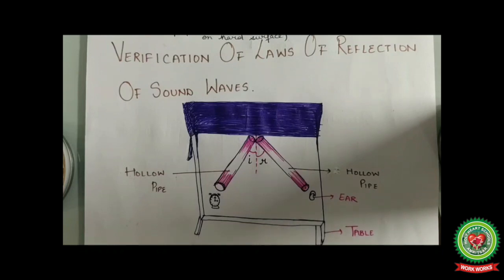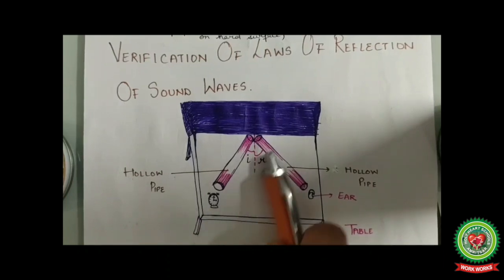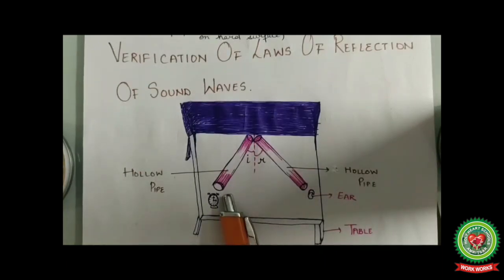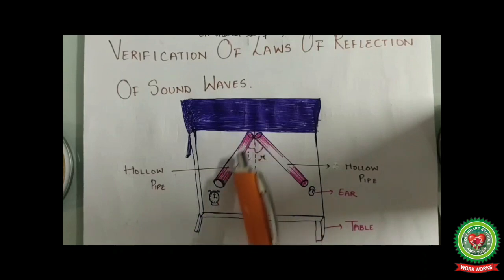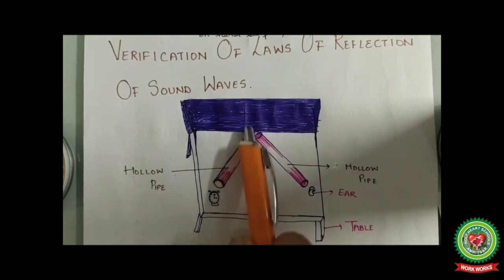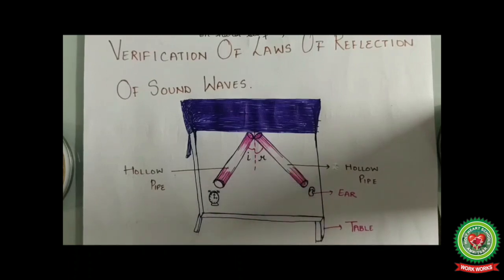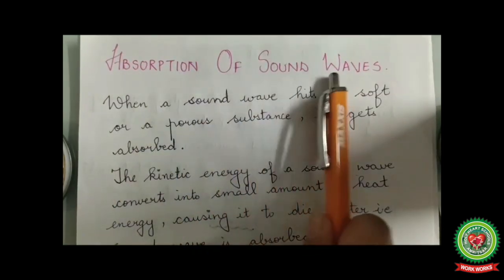Keep your ear near the open end of the other pipe. You will hear the ticking sound of the clock from the pipe. Adjust this pipe until the sound is clearer — at one point it will be very clear. This is an example of reflection of sound. The sound waves from the first pipe, which acts as the incident ray, get reflected and pass through the other pipe into your ear. You will notice that the angle of incidence and the angle of reflection are approximately equal, according to the law of reflection.